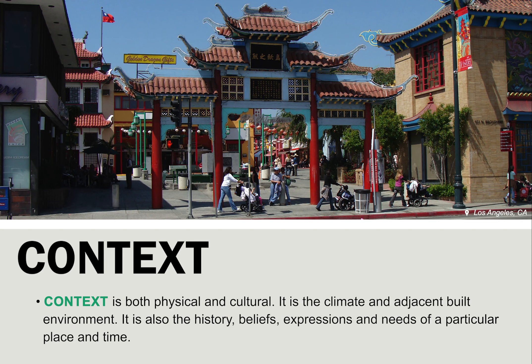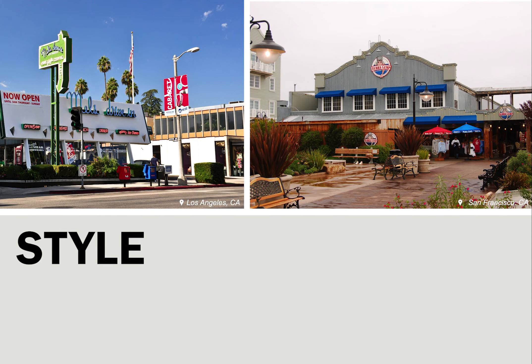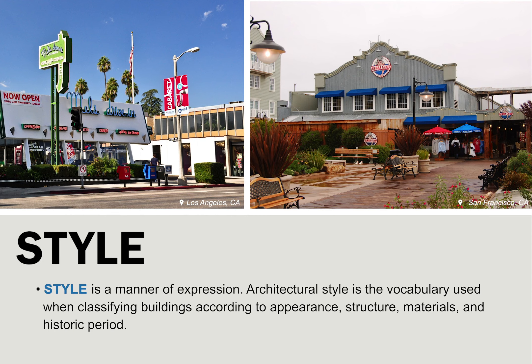The context for architecture may be physical or cultural. A building may be appropriate in one physical or cultural context and inappropriate in another, based on its physical characteristics and its intended purpose. Adding a high-rise office tower in this street of painted ladies — Victorian-era homes — would be inappropriate in this context. Architectural style is the design language and elements used to classify and express the design of buildings according to their appearance, structure, materials, and historic period. The building on the left is described as the Googie architectural style of the mid-20th century, while the image to the right is a building in the more traditional Cape Dutch style. Both buildings are restaurants.